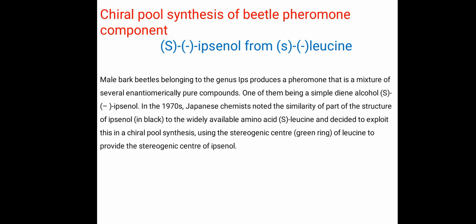Male bark beetles belonging to the genus Ips produce a pheromone. It is a mixture of several enantiomerically pure compounds, and one of these is S-ipsonol. In the 1970s, a Japanese chemist recognized the structural similarity between S-ipsonol and the widely available amino acid S-leucine. Chiral pool synthesis was used, employing the stereogenic center of leucine to provide the stereogenic center of ipsonol.